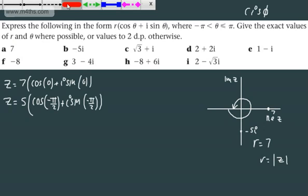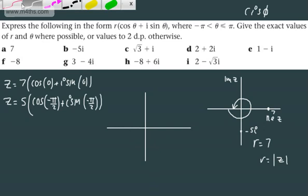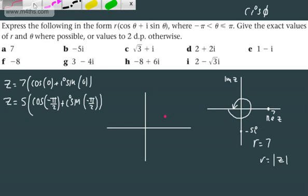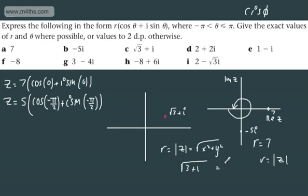Let's now look at root 3 plus i. We go along root 3 along the real axis, and up 1 — placing the complex number in Cartesian form as root 3 plus i. We've shown that R is equal to the modulus of Z, or the square root of x squared plus y squared. So we've got the square root of x squared, which is 3, plus 1, which gives us the square root of 4, which is 2.